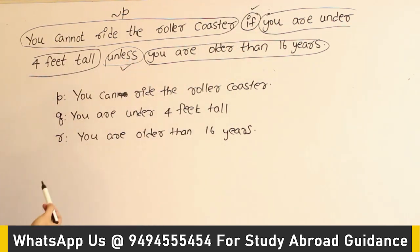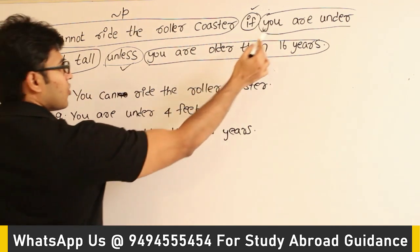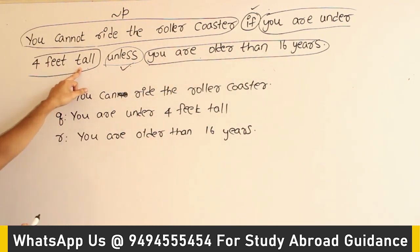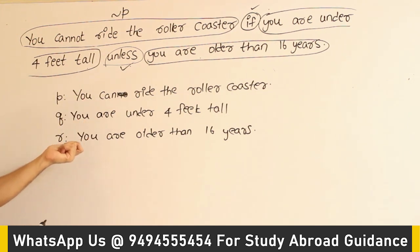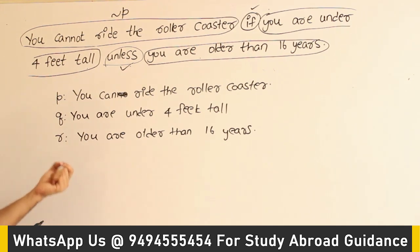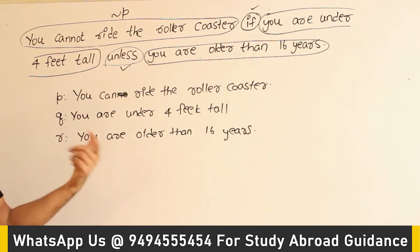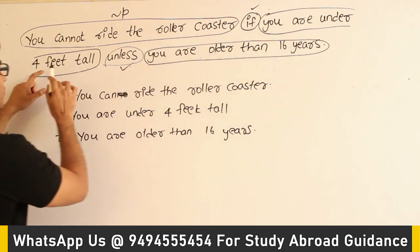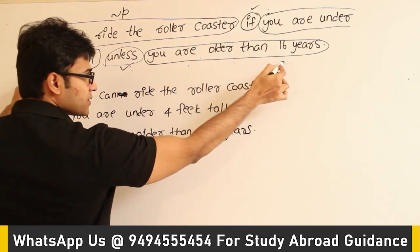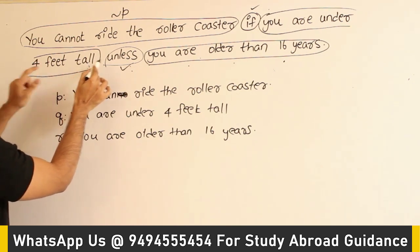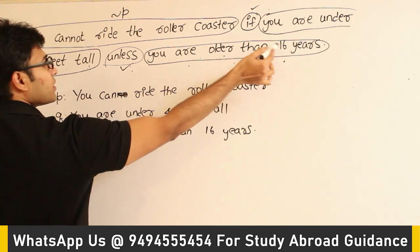Now let us see 'unless.' How to interpret unless: 'you are under 4 feet tall, unless you are older than 16 years.' It is a difficult statement to understand. If you are good with English, you will understand it; otherwise, initially it will be difficult. But we will try to analyze all the possible difficult examples, so that even in the exam you will be able to answer it. 'You are under 4 feet tall, unless you are older than 16 years' has the same meaning as 'you are under 4 feet tall AND you are not older than 16 years.'